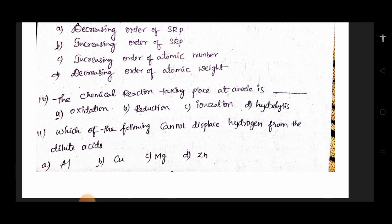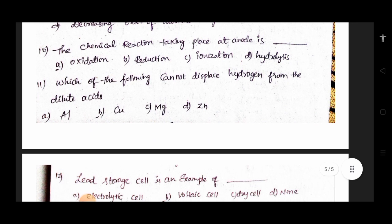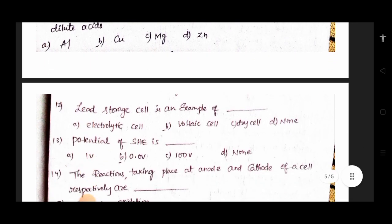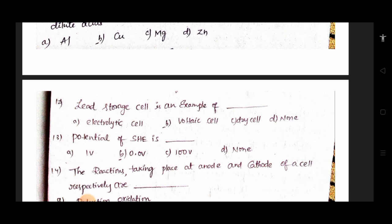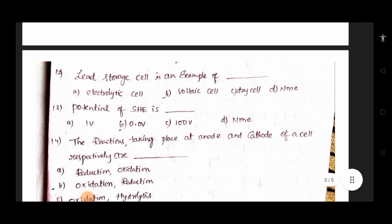Which of the following cannot displace hydrogen from the dilute acids? Lead storage cell is an example of electrolytic cell, voltaic cell, dry cell, or none. The four options we are going to have the temperature. Potential of SRP is 1 volt or 0.0 volt, 100 volt, and none.